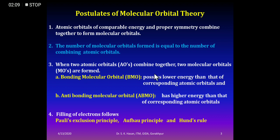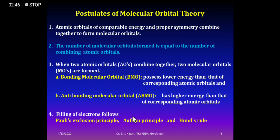When two atomic orbitals combine, two molecular orbitals are formed. The first is the bonding molecular orbital (BMO), which has lower energy than the corresponding atomic orbitals. The second is the anti-bonding molecular orbital (ABMO), which has higher energy. Filling of electrons follows the Aufbau principle, Pauli's exclusion principle, and Hund's rule.